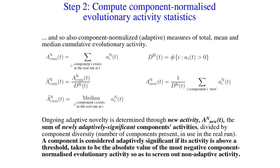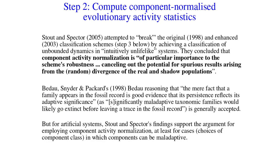Thanks to the observation that the distribution of activities for non-adaptive components will be symmetric about zero, we also have a very simple way of measuring ongoing adaptive novelty. Back in 2005, Stout and Spectre attempted to break the original and enhanced classification schemes — the latter using component-normalised activity statistics — by achieving a classification of unbounded dynamics in intuitive and life-like systems. They concluded that component activity normalisation is of particular importance to the scheme's robustness, cancelling out the potential for spurious results arising from random divergence of real and shadow populations. So for artificial systems, Stout and Spectre's findings support the argument for employing component activity normalisation.